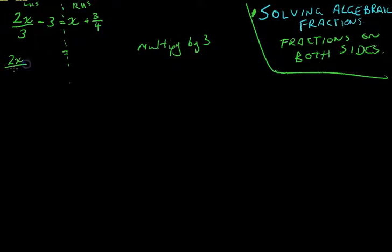2x over 3, and I'm multiplying that by 3. Minus 3, and I'm multiplying that by 3. Equals x, and I'm multiplying that by 3. Plus, 3 on 4, and I'm multiplying that by 3.